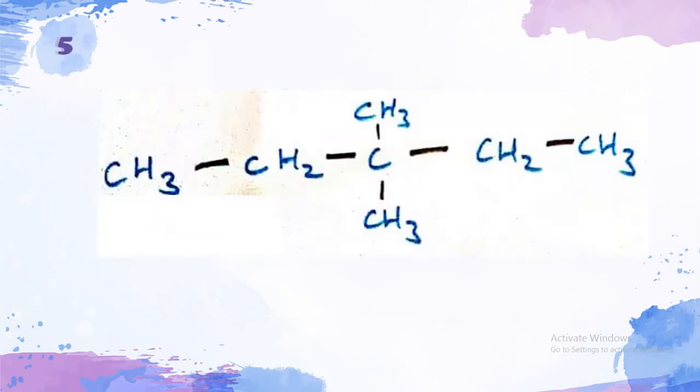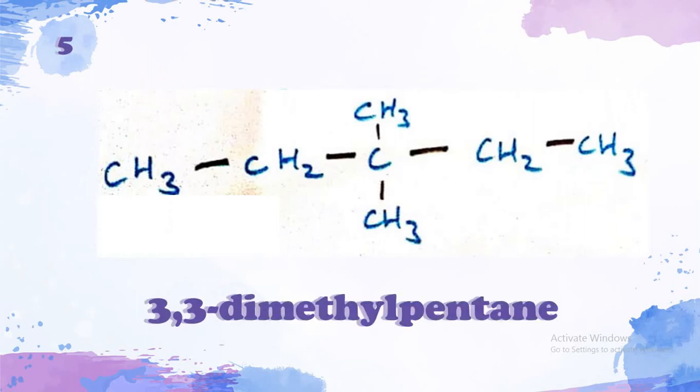And then, the fifth isomer. The fifth isomer has 2 methyl branches at the third carbon atom of its main chain which is a pentane. So, it's called 3,3-dimethyl pentane.